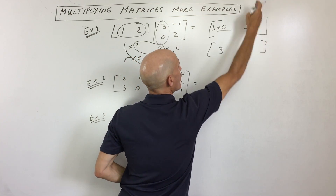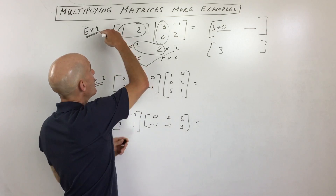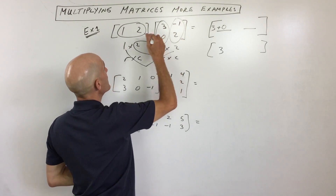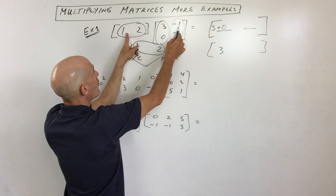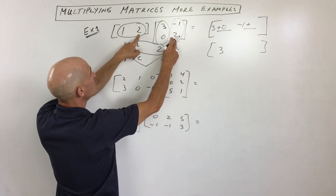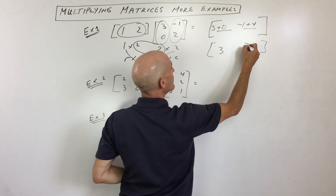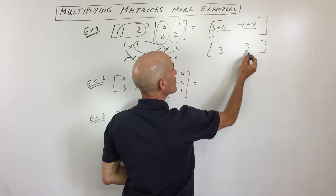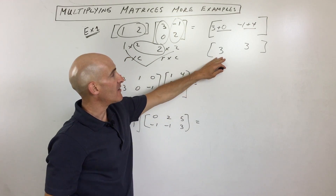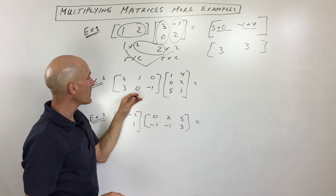This one here is in the first row, second column. So that tells us what to do — we take the first row times the second column right here. So I take one times negative one, which is negative one, plus two times two, which is four. We add those together and we get three. So this just happened to work out to be the same two numbers, three and three, but that's just a coincidence. So let's go to another example, example number two.